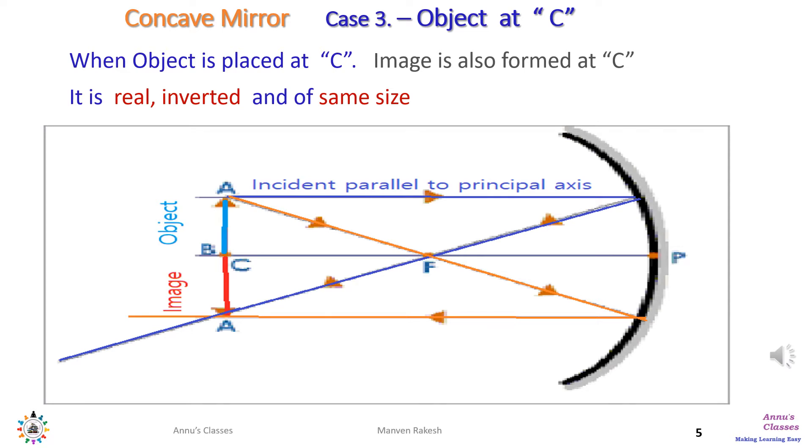In the third case, we keep the object at center of curvature C. Two rays: one in blue color is parallel to the principal axis and rebounds back passing through F; second in orange color passes through F first and rebounds back parallel to the principal axis. Both these rays after reflection meet at C and the image formed is of the same size as the object. It is real and inverted.